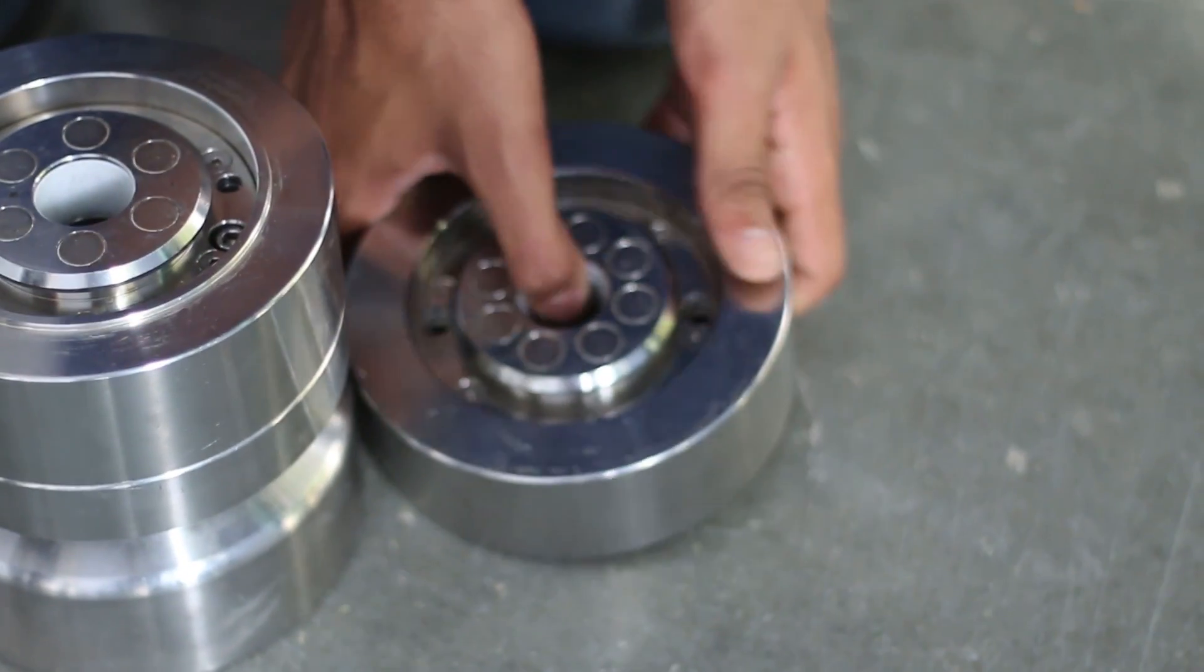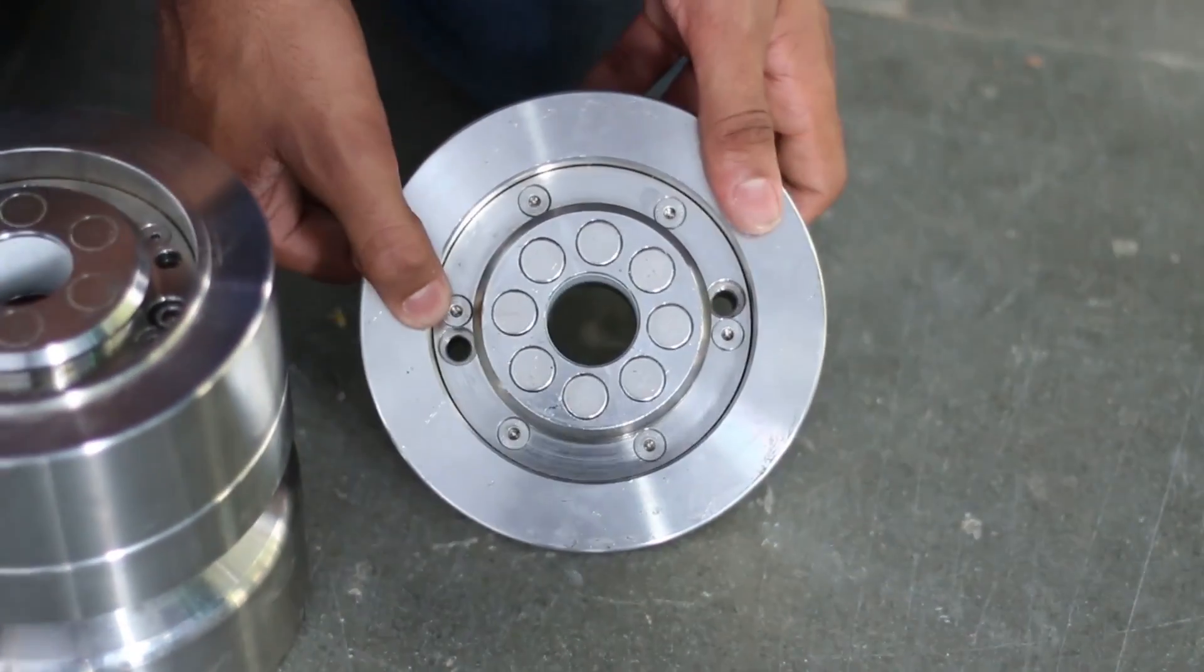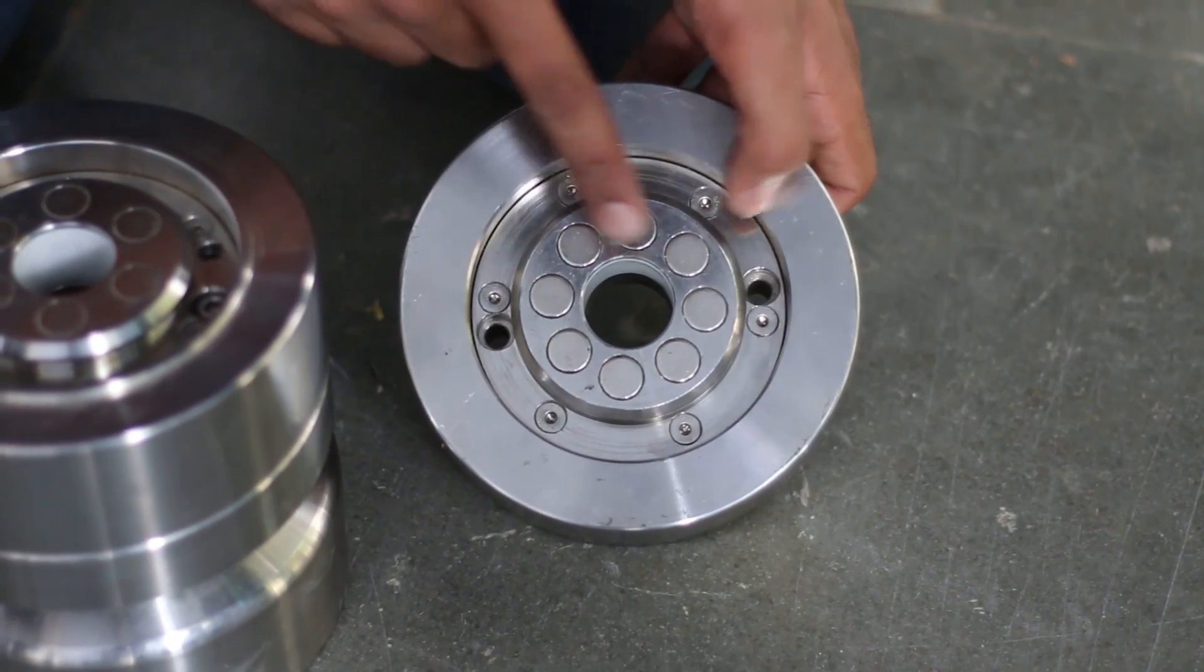Then, the other 5 kg weight is placed on the top of that and tightened similarly as before using the bolts.